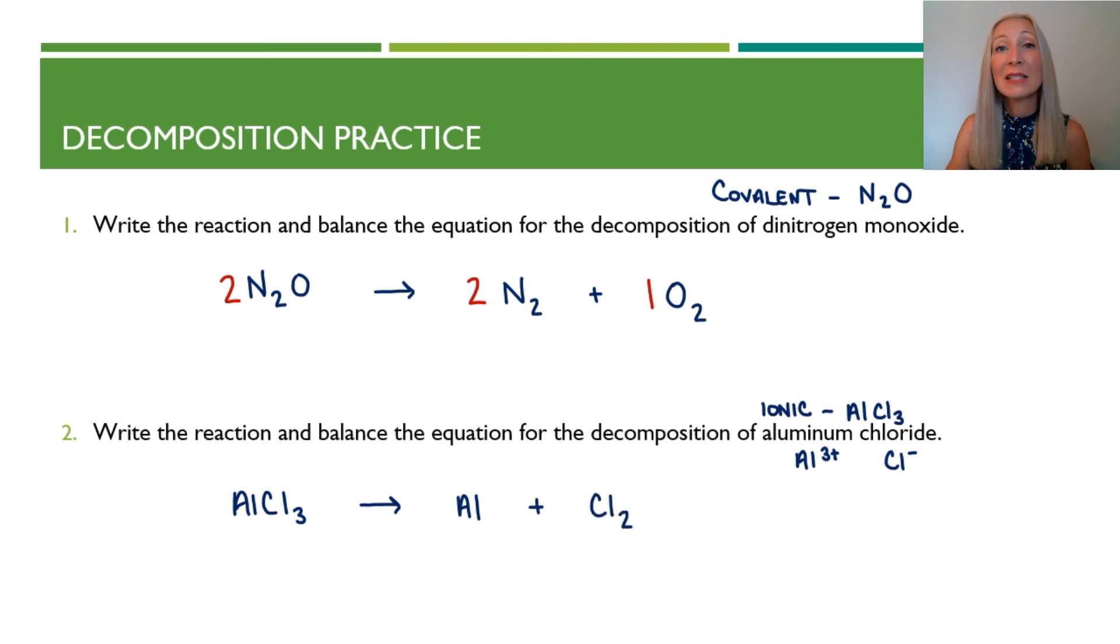Now, this is chlorine gas, which is Cl2 because chlorine is one of those diatomic elements. Do not forget about the diatomic elements. So aluminum is an element and chlorine is an element. It just so happens to be diatomic. So we have to include the two subscript.